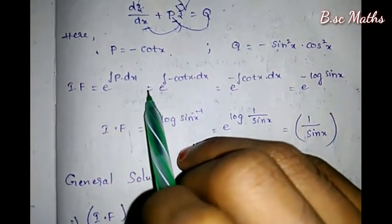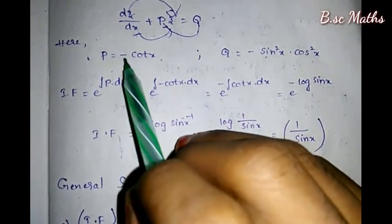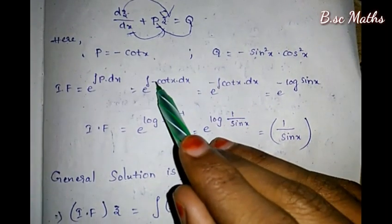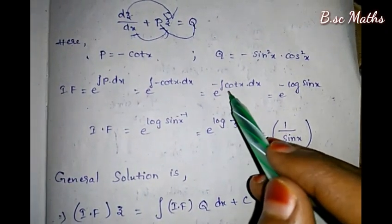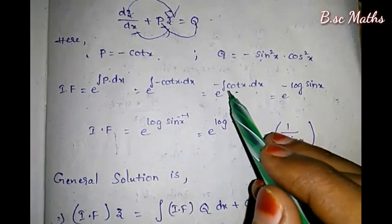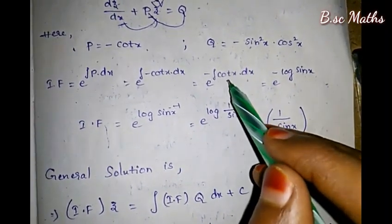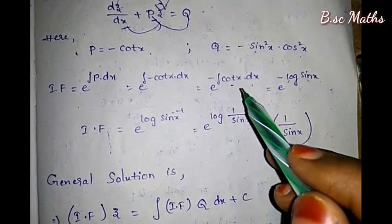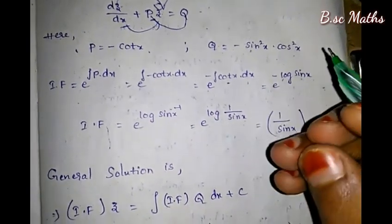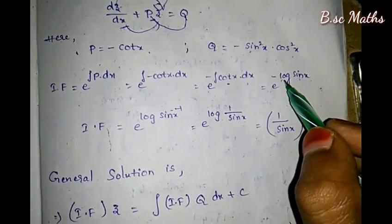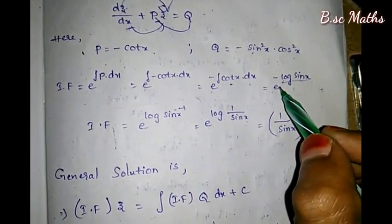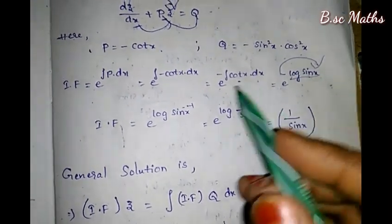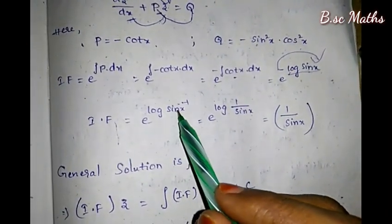The integrating factor is e to the power of integral P dx, which is e to the power of integral of minus cot(x) dx. The integral of cot(x) dx is log(sin x), so we have e to the power of minus log(sin x), which equals e to the power log(sin x)⁻¹, giving 1/sin(x).